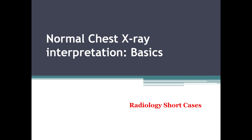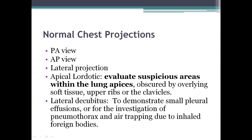In this part we will be discussing mainly about chest projections and technical quality. Normal chest projections which we use are: PA view (posterior-anterior view), AP view (anterior-posterior view), lateral projection, apical lordotic view — to evaluate suspicious areas within the lung apices which are generally obscured because of soft tissues, upper ribs, or clavicles — and lastly, lateral decubitus view.